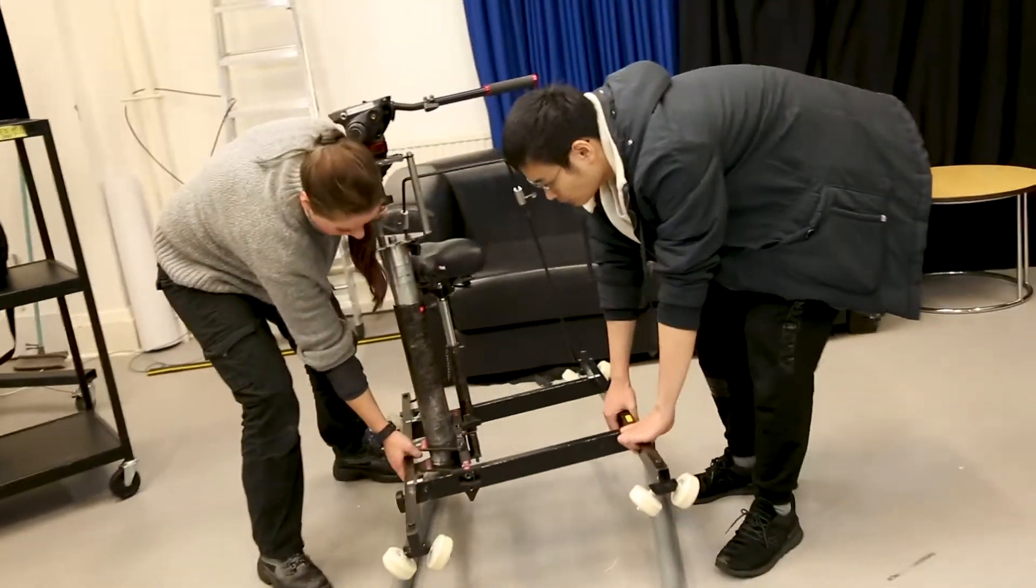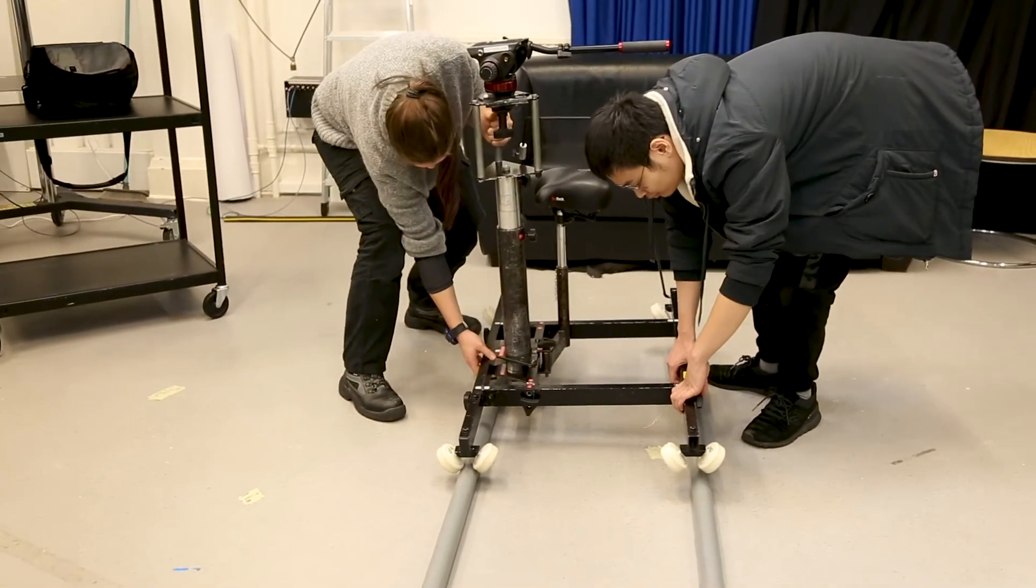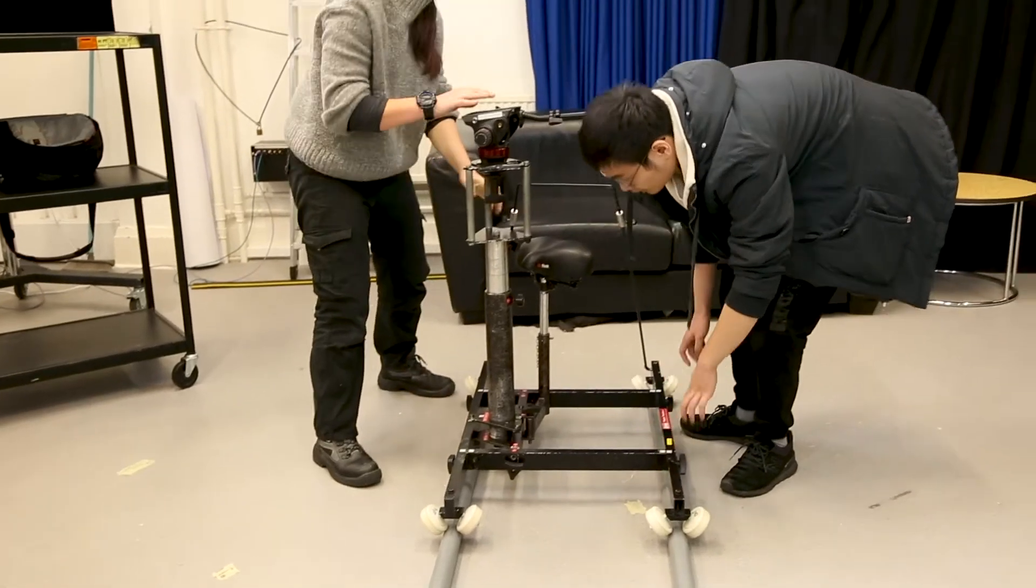Carefully position the sit on dolly onto the tracks. Dolly wheels are designed to be used on pipes so please do not use it on the ground as it will damage them.